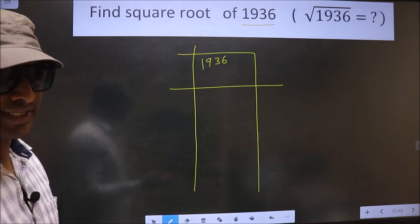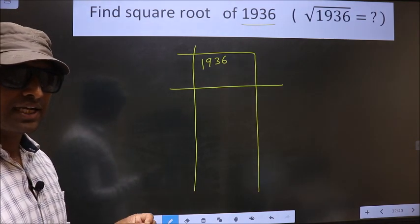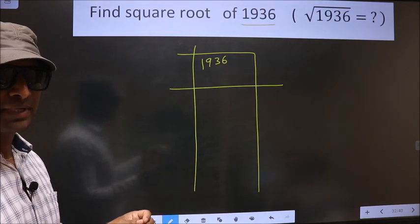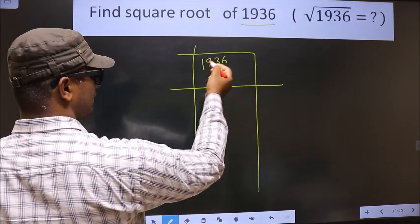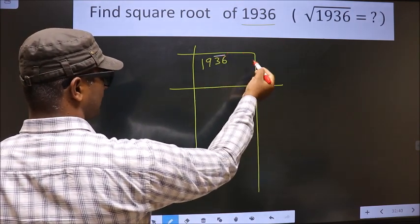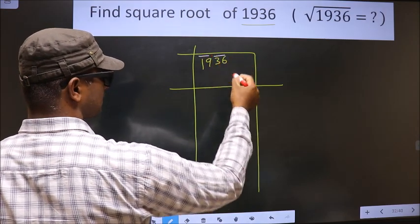Okay, next. Now we should divide the given number into pairs, starting from this side. These two numbers, one pair, these two numbers, another pair.